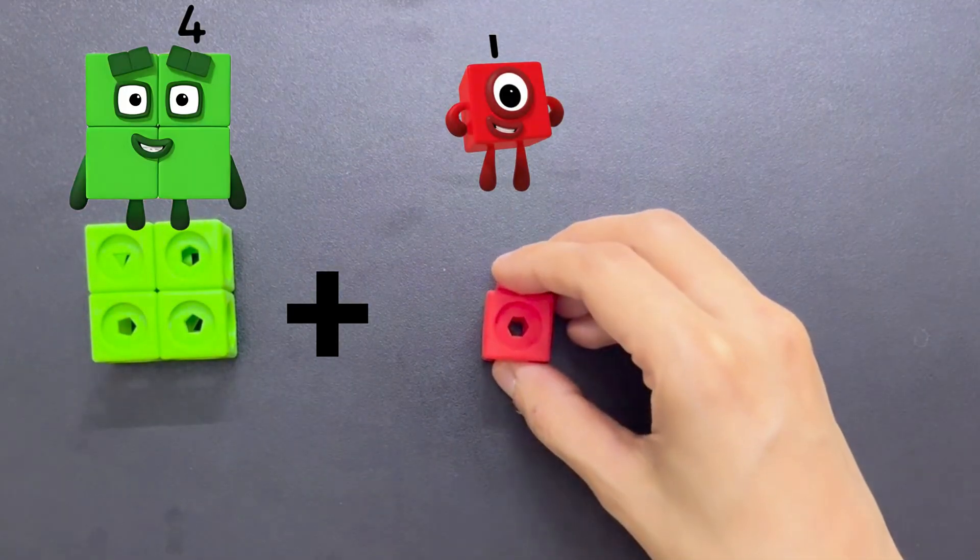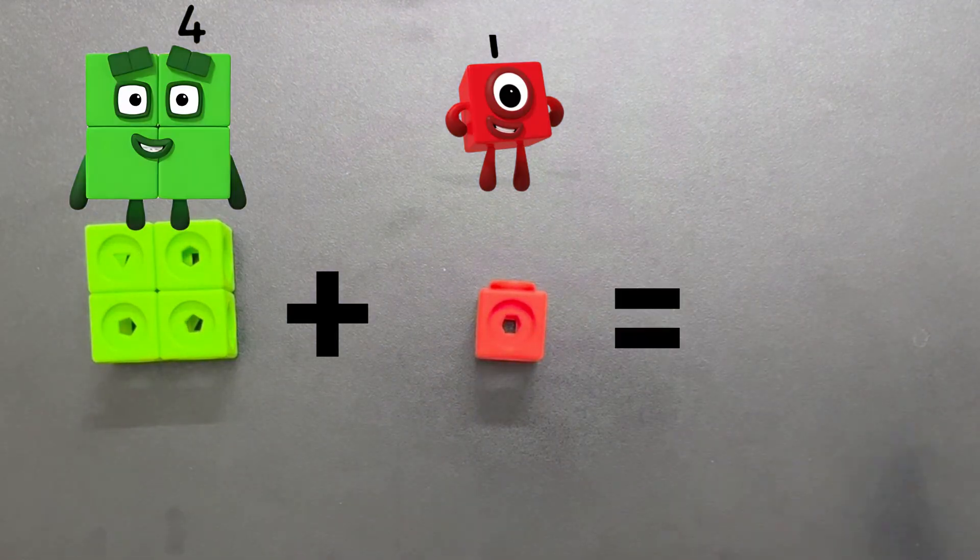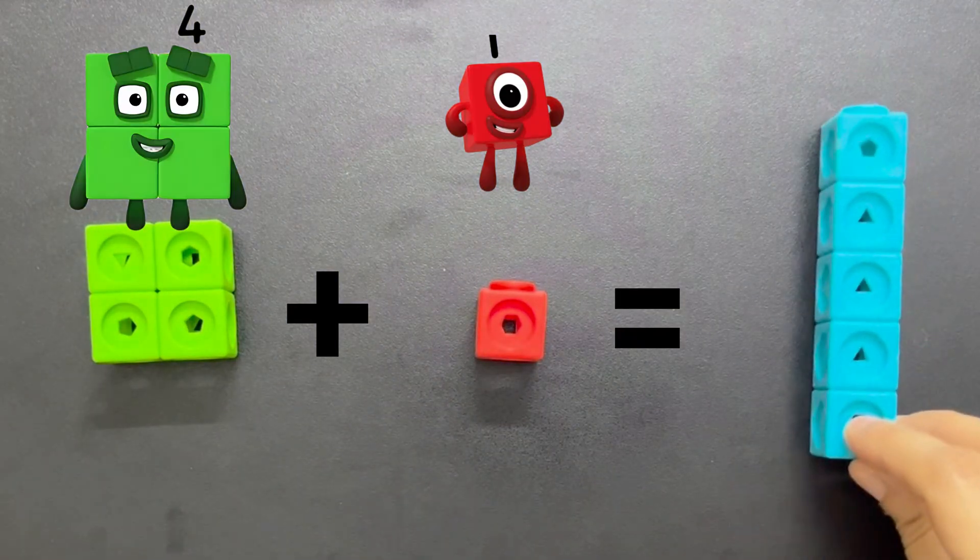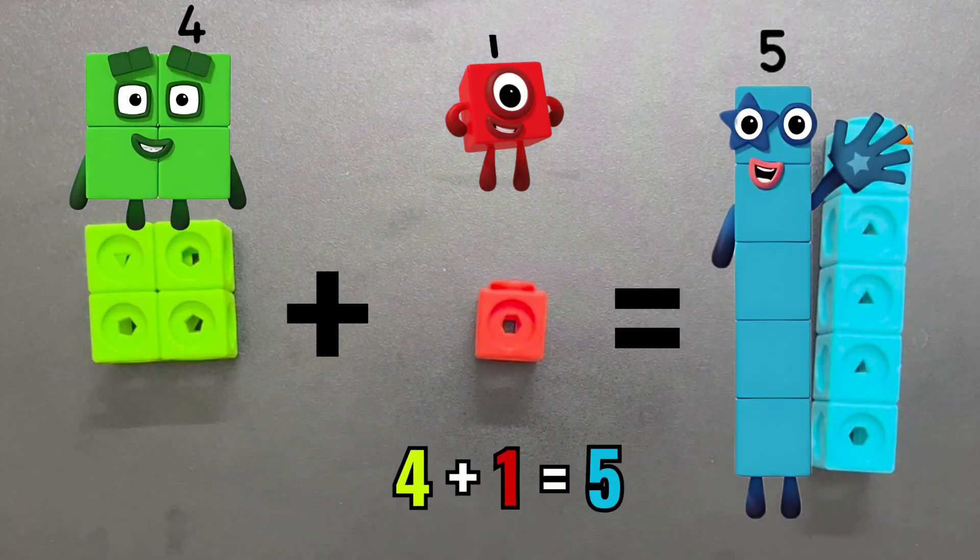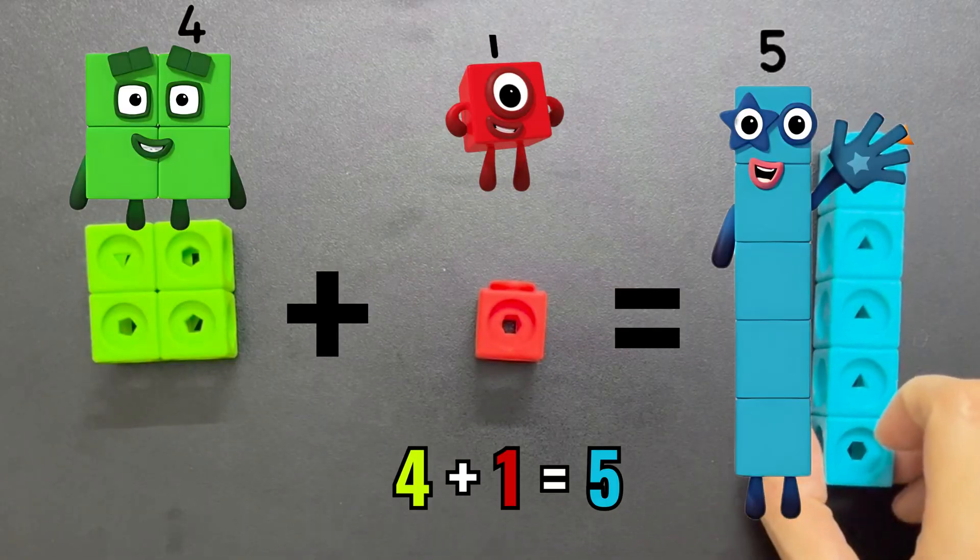Four plus one equals five. Number Five is flashy and fun—she's a superstar who enjoys being the center of attention.